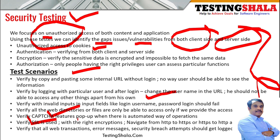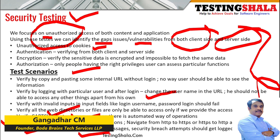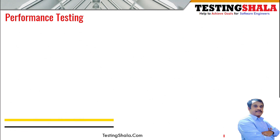If someone tries to access the application in an automated way or via a bot, the CAPTCHA mechanism should be in place to prevent those automated operations. We should also test for the Secure Socket Layer (SSL) protocol. A transaction history of all operations performed on the web application should be tracked in log files — including errors, security breaches, and different log entries.